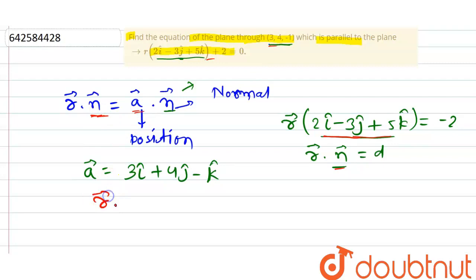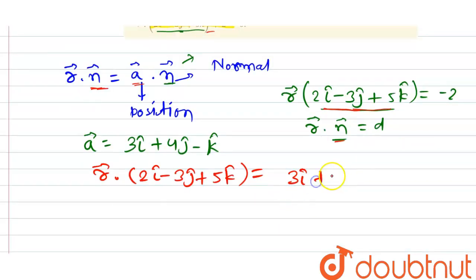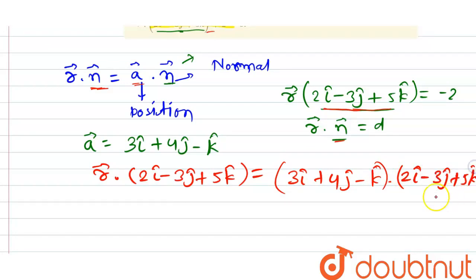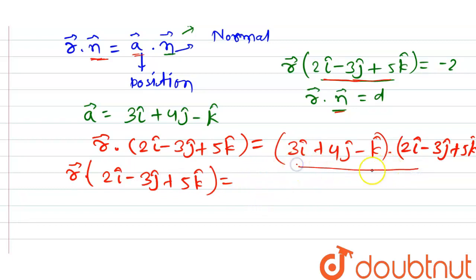So: vector r dot (2î − 3ĵ + 5k̂) = vector a dot vector n, where vector a = 3î + 4ĵ − k̂ and vector n = 2î − 3ĵ + 5k̂. Computing the dot product: 3 × 2 = 6, plus 4 × (−3) = −12, and (−1) × 5 = −5.